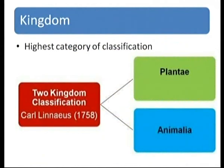The highest taxonomical category is kingdom. The two-kingdom classification was given by Carolus Linnaeus in 1758, dividing all living organisms into two categories: Plantae (all plants) and Animalia (all animals).